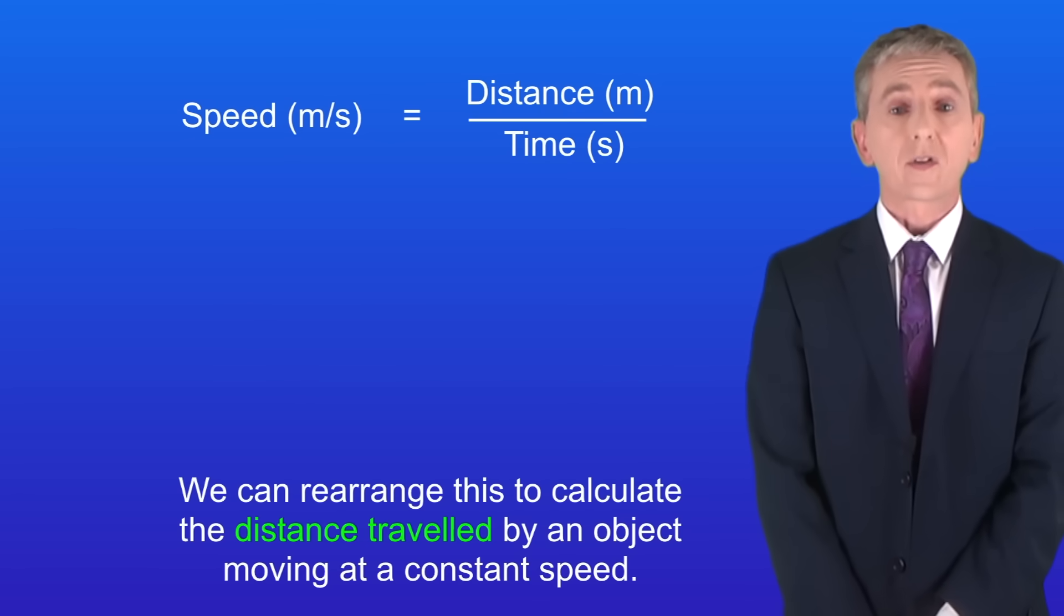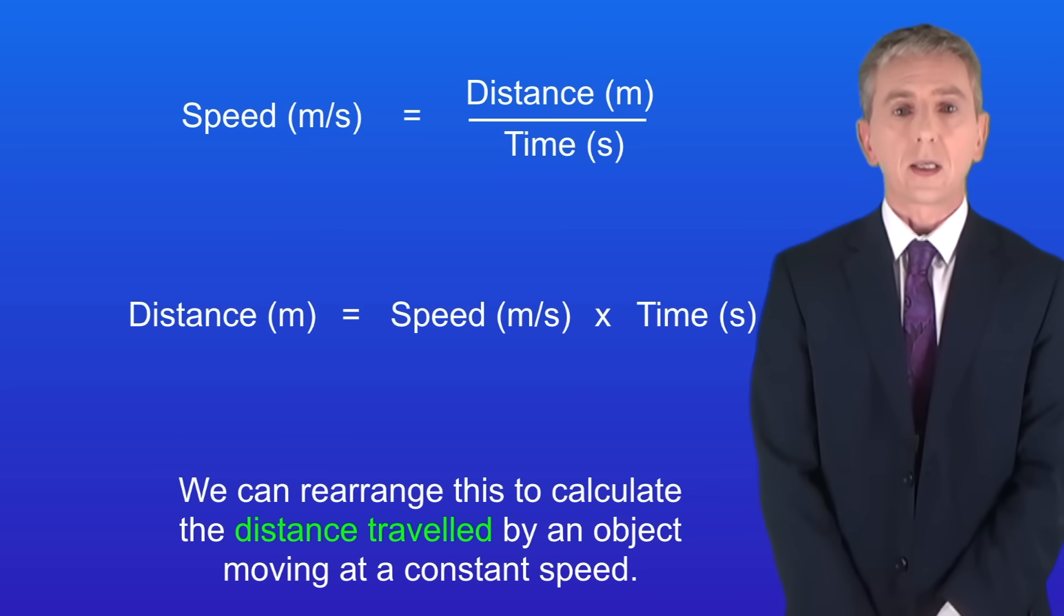Now if we go back to a previous equation we can rearrange this to calculate the distance traveled by an object moving at a constant speed. The distance in meters equals the speed in meters per second multiplied by the time in seconds. And again you're not given this in the exam.